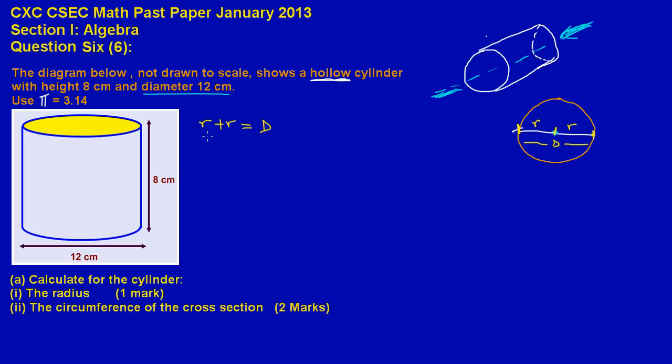Now R plus R, that would be 2R, is equal to D which is my diameter based on our diagram there. So basically, if they want us to find R, which is the radius here, we will just simply transpose. 2 is multiplying R, so I'm just simply going to divide through by 2, and this is part 1. And 2 will cancel 2, so I have an R left over there, and R is equal to D upon 2.